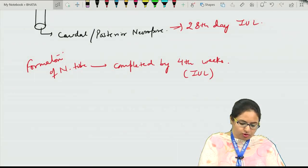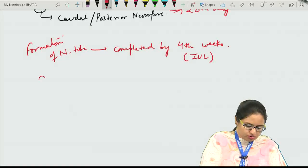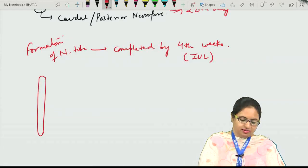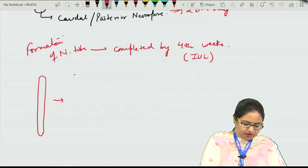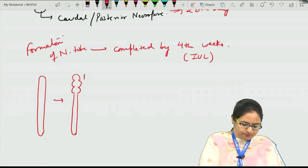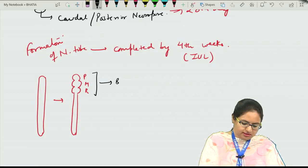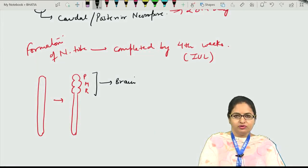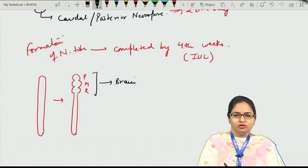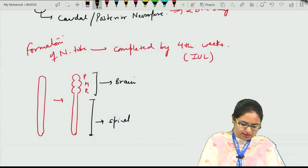Defective closure of the cranial neuropore leads to anencephaly. Defective closure of the caudal neuropore leads to spina bifida. The cranial end of the neural tube undergoes dilatations forming prosencephalon, mesencephalon, and rhombencephalon, which lead to various components of the brain. The caudal portion leads to formation of the spinal cord.